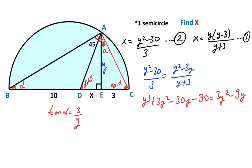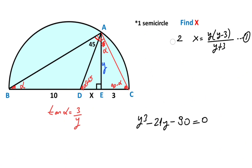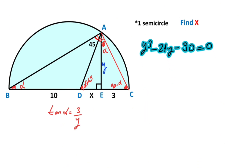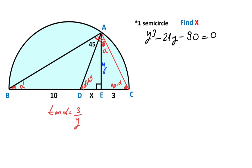So if you simplify the expression — combining like terms — we get y³ minus 21y minus 90 equals 0. So we get a cubic equation. Let's clear here. If we add and subtract 15y to both sides, we get: y³ − 36y + 15y − 90 equals 0.